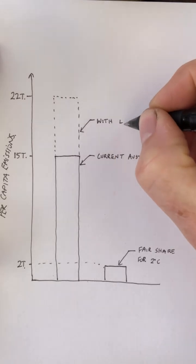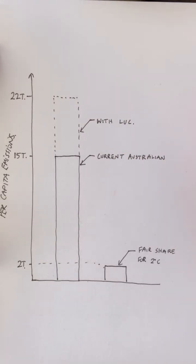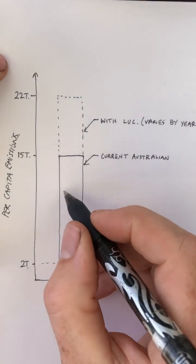The effect of land use change varies by year, but it's not to be understated. Most of this is land clearing for animal agriculture.